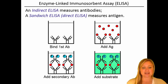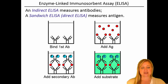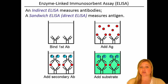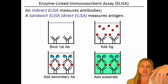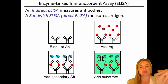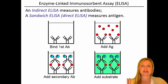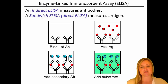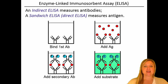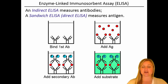Now you can see why this is called a sandwich ELISA — we end up making a little sandwich where the bread is antibodies. To summarize: an indirect ELISA measures antibodies, while a sandwich ELISA, also known as a direct ELISA, measures the antigen. The difference is really just what is coated on the ELISA plate at the very beginning. If you coat the antigen, you're assaying for antibodies in the patient sample. If you coat the plate with an antibody, that antibody binds to the antigen in the patient sample. The detection antibody and substrate steps are exactly the same.